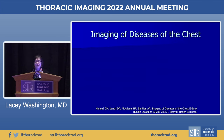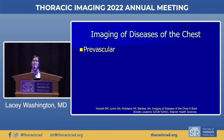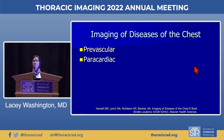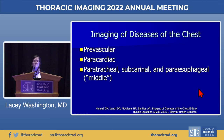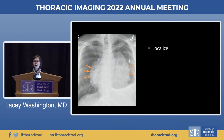For purposes of this talk, I'll be using a classification that is basically anterior, middle, and posterior, drawn from a chapter in 'Imaging of the Diseases of the Chest.' We'll be talking about the anterior mediastinum or prevascular region, a separate pericardiac region, and then the middle mediastinum defined as the paratracheal, subcarinal, and paraesophageal region, and finally the paravertebral or more posterior region.